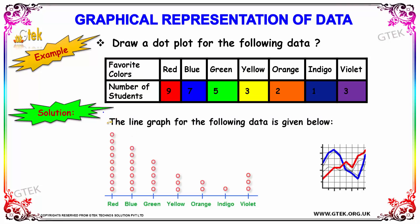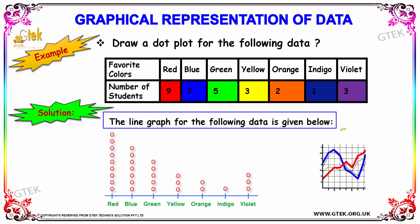Let's see the solution of how to draw the line graph for the following data. For red we have 9, so we draw a dot at 9. For blue, the number of students who like blue color is 7, so we draw a dot at 7.